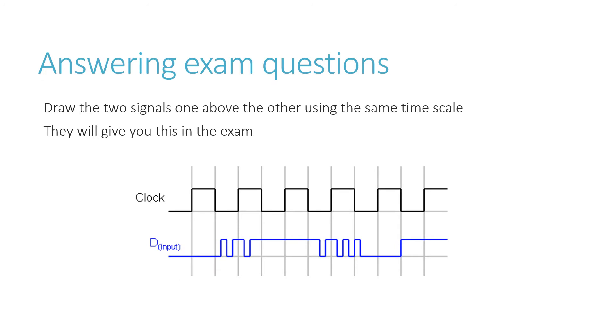So in an exam, you may be asked to show the output of a D-type flip-flop. If they ask you to do that, they will show you two things in a graph very much like this. The top line you'll recognize. That's the tick of the system clock. The lower line is the wobbly and unpredictable input, for example, from a sensor.